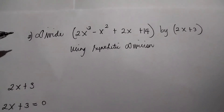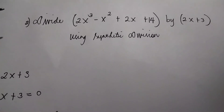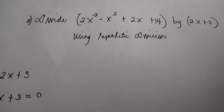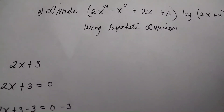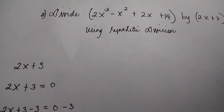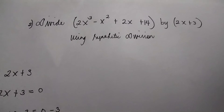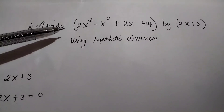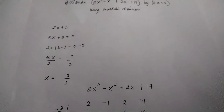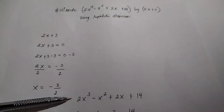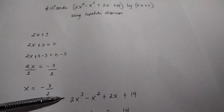Example number 2: divide 2x cubed minus x squared plus 2x plus 14 by 2x plus 3 using synthetic division. First, write the dividend in standard form and insert zeros as coefficients of any missing term. Both dividend and divisor should be in standard form. We notice that the given is already in standard form and there is no missing term, so we write: 2x cubed minus x squared plus 2x plus 14.